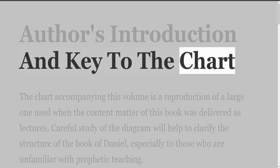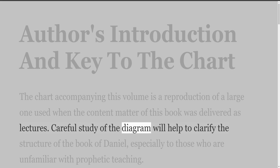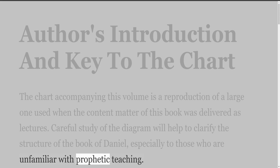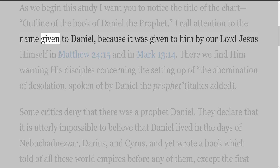The chart accompanying this volume is a reproduction of a large one used when the content matter of this book was delivered as lectures. Careful study of the diagram will help to clarify the structure of the Book of Daniel, especially to those who are unfamiliar with prophetic teaching. As we begin this study, notice the title of the chart: 'Outline of the Book of Daniel the Prophet.'